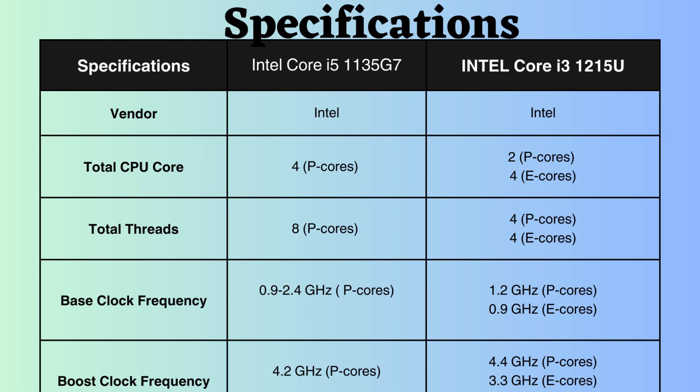The base clock frequency of the Intel Core i5-1135G7 for performance cores is 0.9 to 2.4 GHz, while for the Intel Core i3-1215U it is 1.2 GHz for performance cores and 0.9 GHz for efficiency cores. In this case, the Intel Core i5-1135G7 will offer better single-threaded performance than the Intel Core i3-1215U.